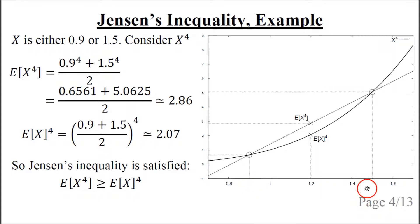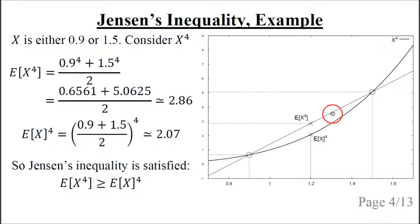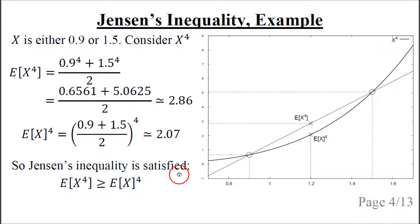If we take the mean of the x values, we get 1.2. If we raise that to the power of 4, we get a value of about 2.07. If we instead take the mean of the two values of x raised to the power of 4, the mean is about 2.86. This point lies on the straight line between the two points. Because the function x to the power of 4 is convex, we know that this mean is greater than the mean of x to the power of 4. So Jensen's inequality is satisfied.